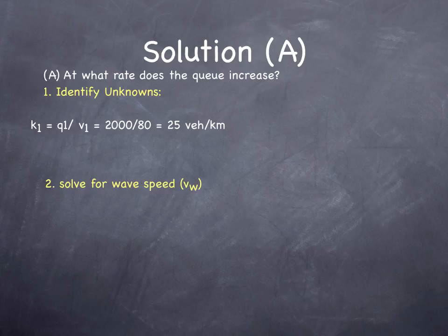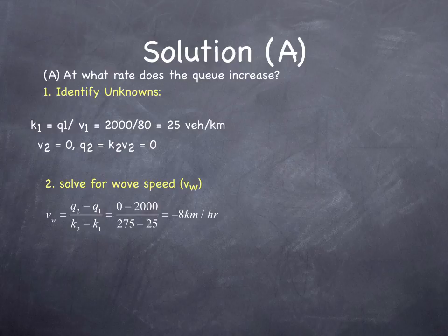Okay. We were told that the road was blocked, so the cars come to a stop, so V sub 2 equals 0 and Q sub 2 equals 0. Logically, K sub 2 is undefined. But here we are told K sub 2 is jam density, which is given as 275 vehicles per kilometer. K sub 1 was 25 vehicles per kilometer. Q sub 2 was 0. Q sub 1 is 2,000. So, we have a wave speed of 8 kilometers per hour going backwards justifying the negative sign. The queue is growing. The queue is growing against traffic. What is the rate at which the queue grows in terms of vehicles per hour?